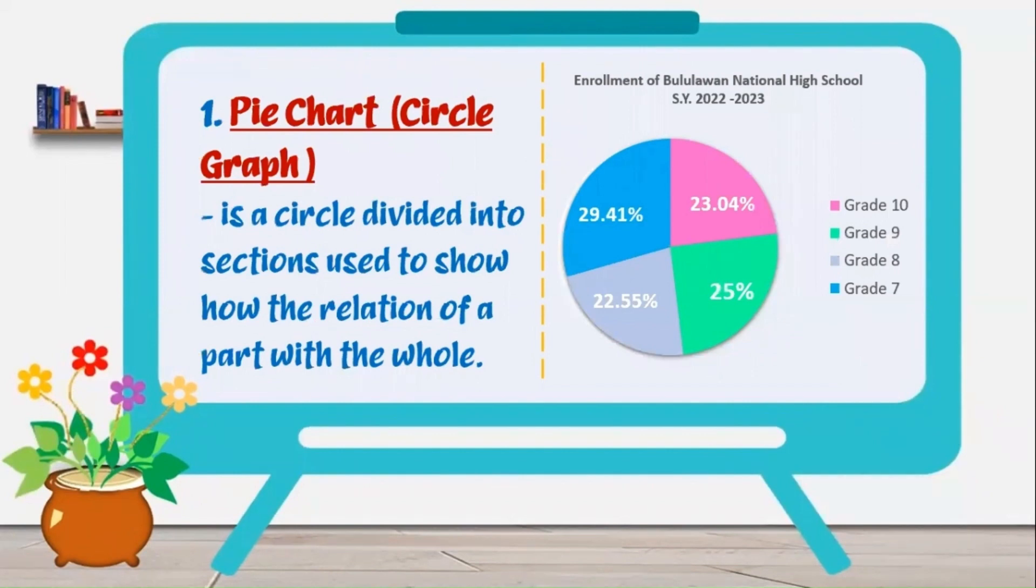First, pie chart. Pie chart is also called a circle graph. It is a circle divided into sections used to show the relation of a part with the whole. At the right is a pie chart showing the enrollment of Bululawa National High School for the school year 2022-2023 from grade 7 to grade 10.